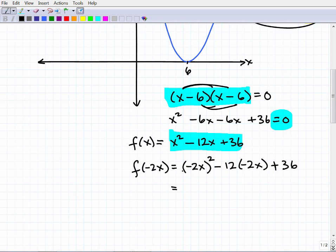So I have this, parentheses negative 2x. And when I square this, what I'm going to get, I'm going to get 4x². Okay. So now here I have a negative 12 times a negative 2x. That's going to be positive 24x plus 36. Okay. And that would be our answer.